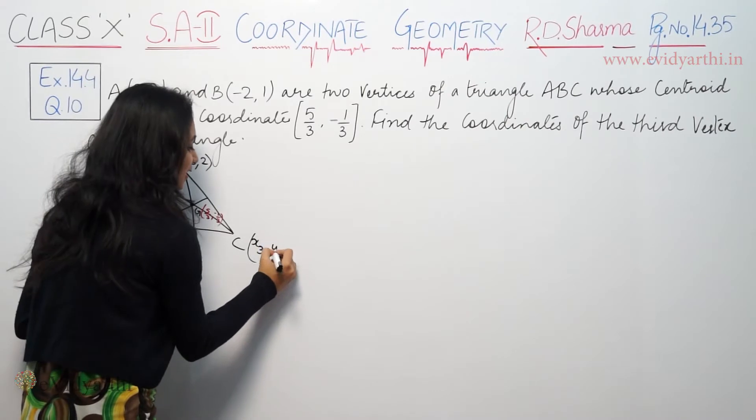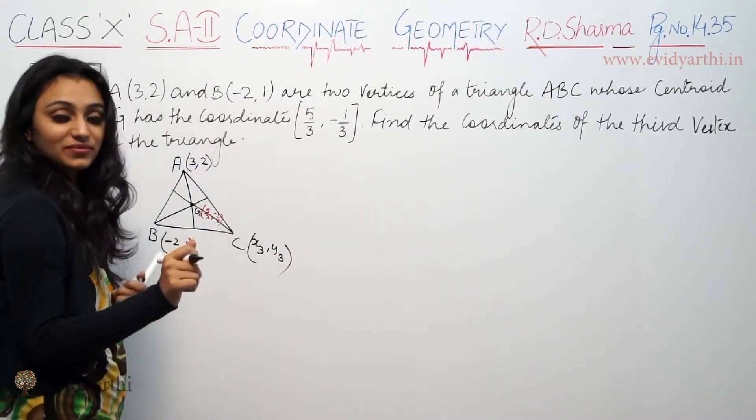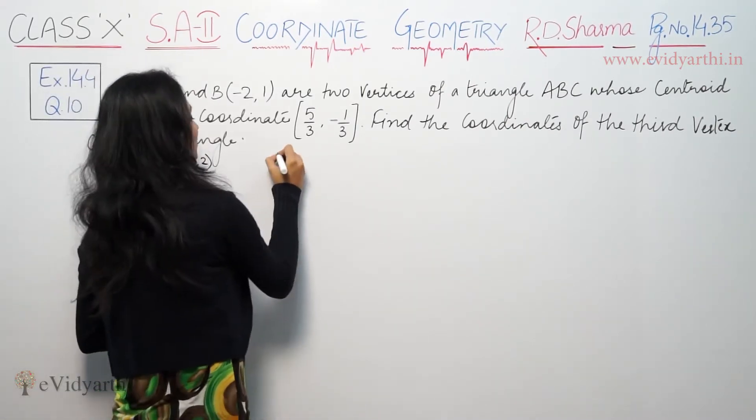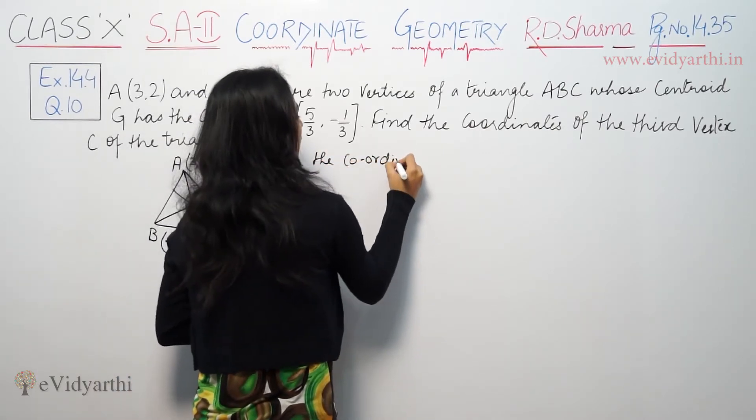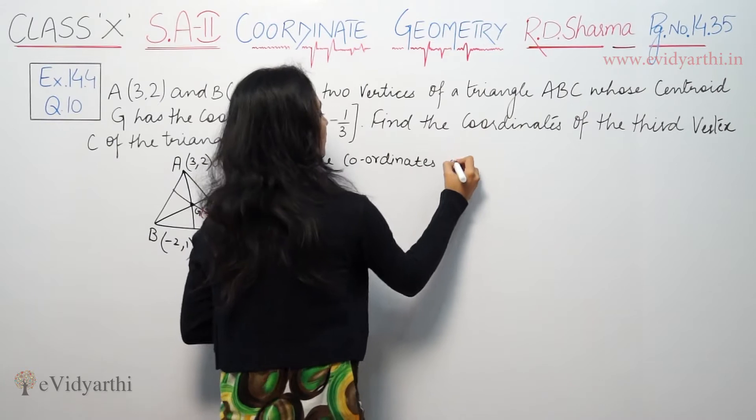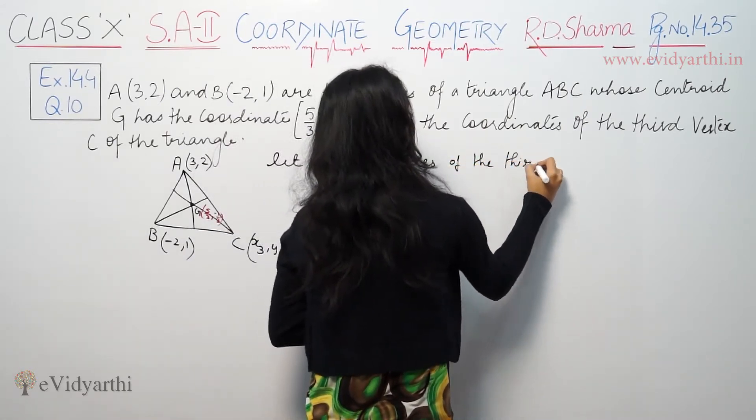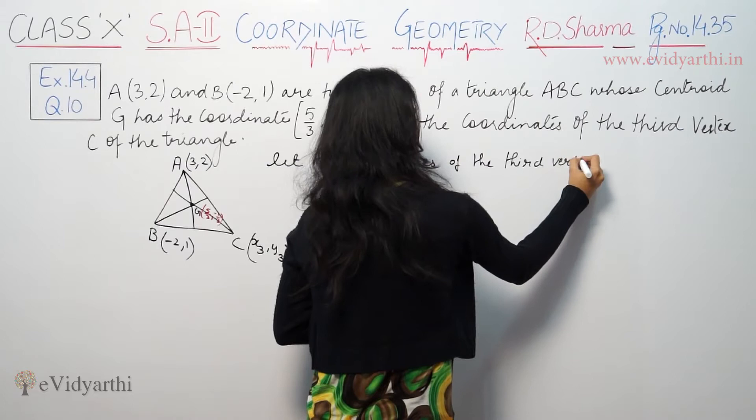X3, Y3. So, let the coordinates of the third vertex be (x3, y3).